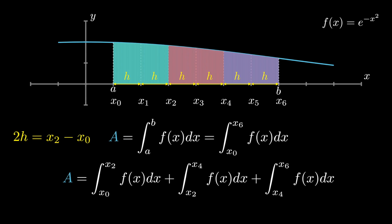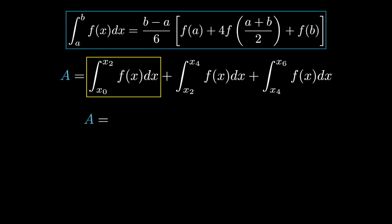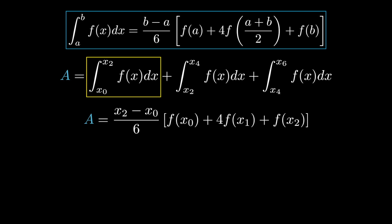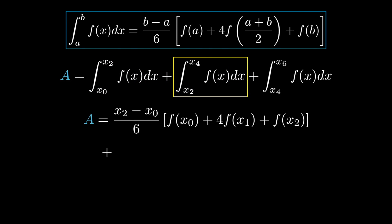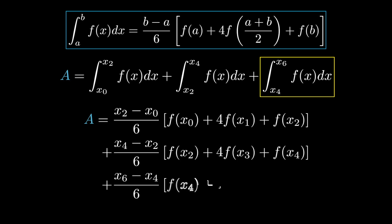The difference between the limits in each sub-interval is 2h. Now let's apply the Simpson's one-third rule to each interval. For the first term: a = x0, b = x2, midpoint = x1. For the second term: a = x2, b = x4, midpoint = x3. For the last term: a = x4, b = x6, midpoint = x5. Substituting these into the formula gives the expression for each sub-interval.